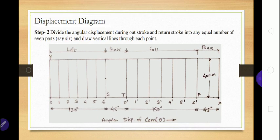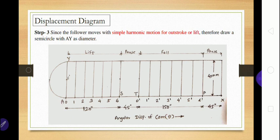Step two is to divide the angular displacements during the outstroke and return stroke into six equal even parts. The outstroke distance of 6 cm is divided into six equal parts, labeled 1 through 6. The return stroke distance is also divided into six equal parts, labeled 0-dash through 6-dash. Vertical lines are then drawn passing through all these equally divided points.